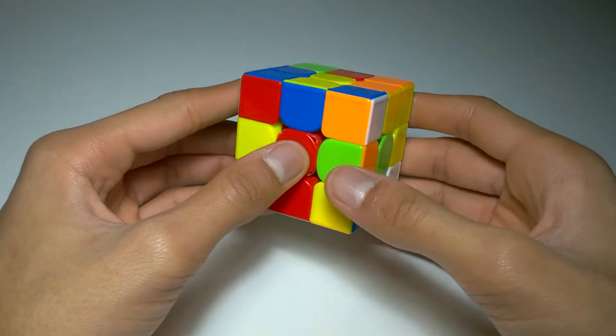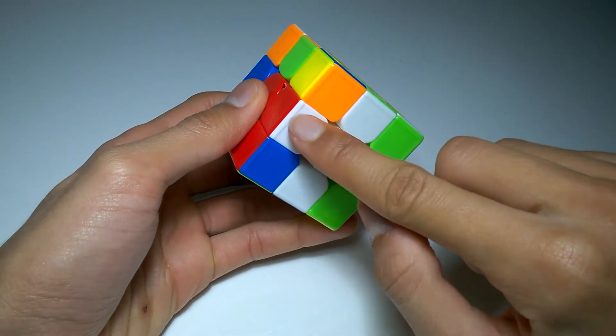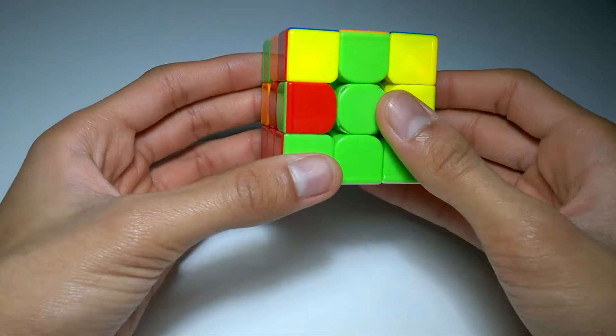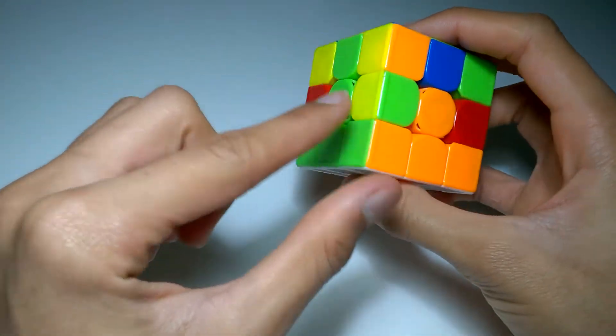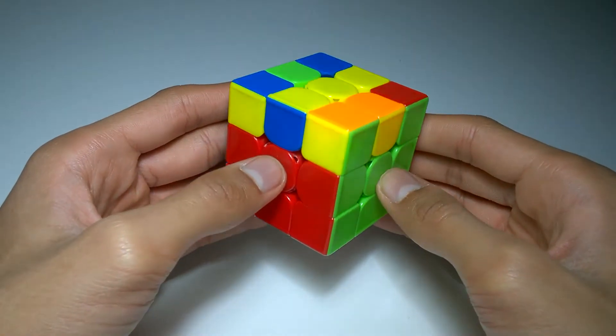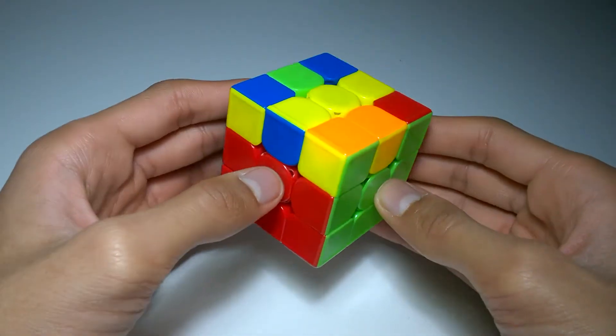Normally, when solving the cube using Beginner's Method, after completing the white cross, you would first solve all of the white corner pieces, and then you would solve all of the middle layer edges. But F2L allows you to solve a corner and its corresponding edge as a pair of pieces, all in one F2L pair.